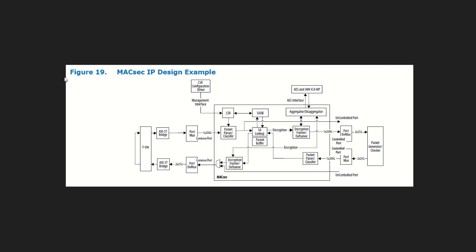Now let's quickly review the block diagram for the example design to see how what we are creating today will work. This block diagram is available in the MACSEC User Guide. Here in figure 19 we have the MACSEC IP example design block diagram. You can find more details on each component throughout the user guide, but for now let's review the general flow of data. It's important to note that the common port interfaces with the Ethernet IP contained on the tile, and the common port contains both the controlled and uncontrolled data.